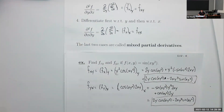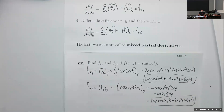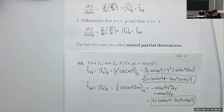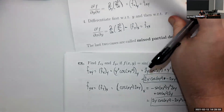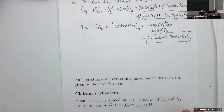Both mixed partials ended up being the same thing. Whether we did x then y or y then x, we got exactly the same result. This is not just a coincidence for this function — this actually works for many different functions. It doesn't matter which order you do the mixed partials; it only matters the number of x-derivatives and number of y-derivatives, not the order. This is called Clairaut's theorem.